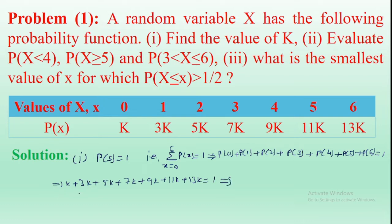Adding all the values on the left-hand side: K + 3K = 4K, plus 5K = 9K, plus 7K = 16K, plus 9K = 25K, plus 11K = 36K, plus 13K = 49K. So 49K = 1, therefore K = 1/49. This is the solution to the first part.